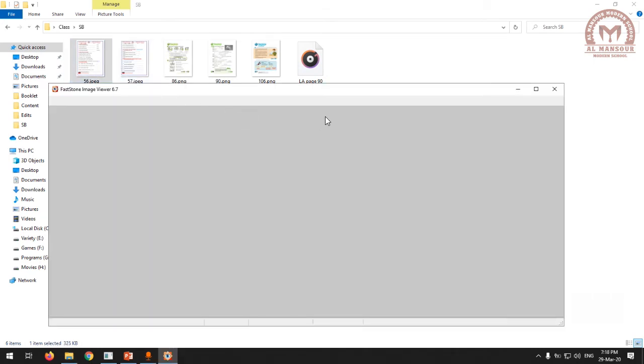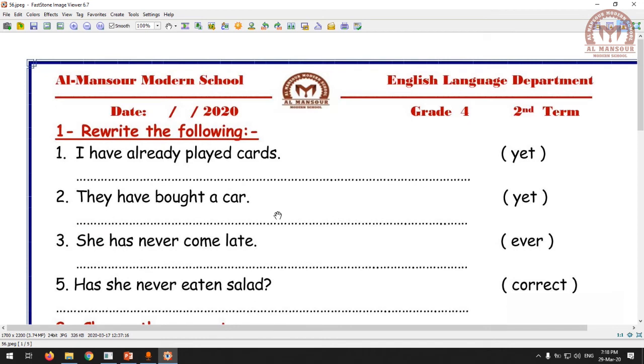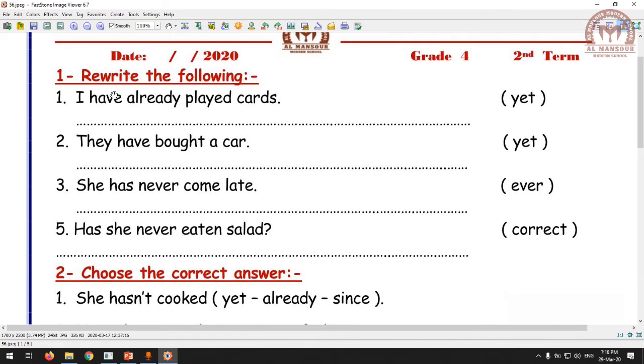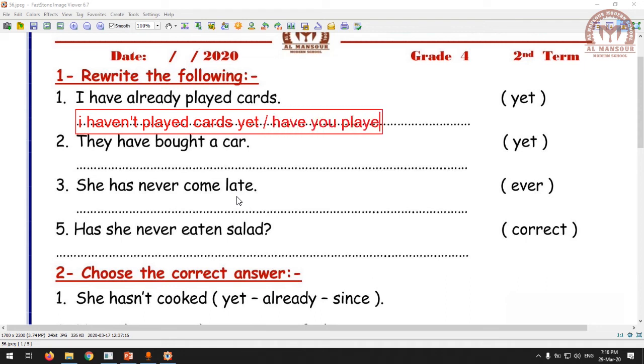I want you to open your booklet on page 56. We have the rewrite exercise here. I'm going to do one for you: I have already played cards. In order to put yet, we have to do one of the following - either convert the sentence to a question or to a negative. So I can say I have never played cards, or I haven't played cards yet. Or we can say have you played cards yet with a question mark. So I put it in a negative sentence or in a question - both answers are considered correct.